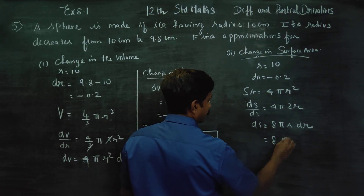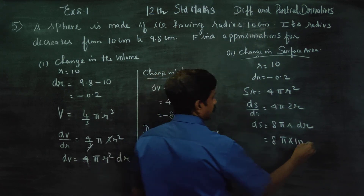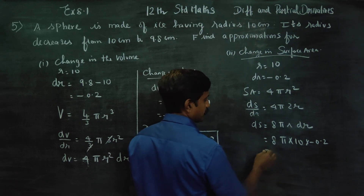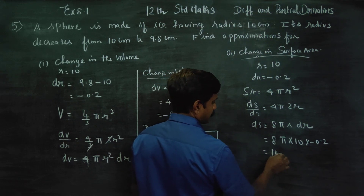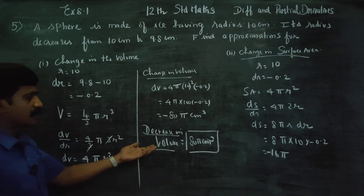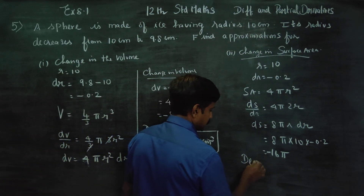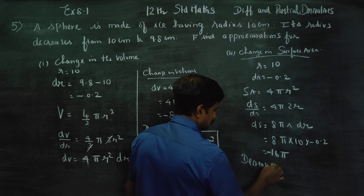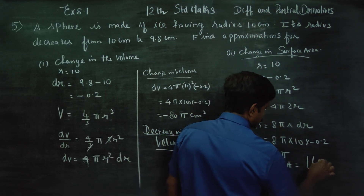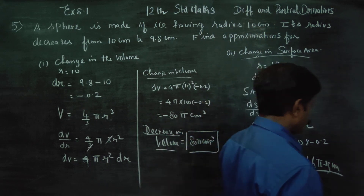So, ds equals 8π into 10 into minus 0.2, which equals minus 16π. The negative symbol indicates a decrease. Therefore, the decrease in surface area is 16π square centimeter.